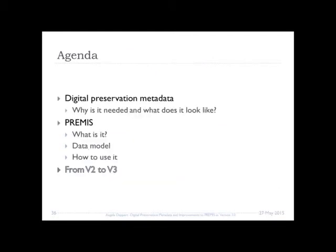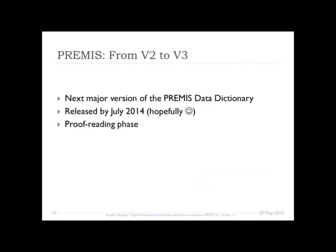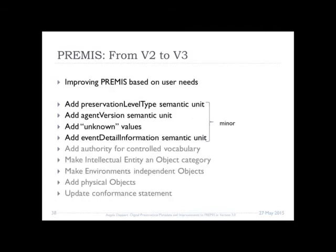Now I'd like to go on to the third part of the presentation: the changes coming up in version 3. This is the next major version — by major version I mean we are actually changing the data model. It is hopefully released in July and we are now in the proofreading and copyediting phase. PREMIS is being improved all the time based on user needs, through application, the online forum, user groups, and direct requests to the editorial committee. The main changes coming up in version 3 are as follows.